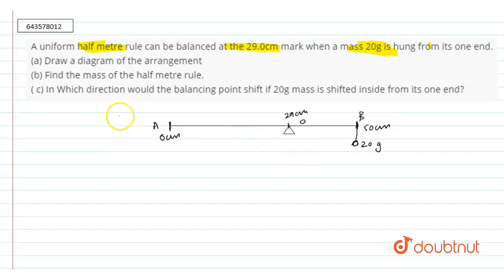Now, in second part we have to find the mass of the half meter rule. So the center point will be the 25 cm and mass of half meter rule will act downwards as mg.